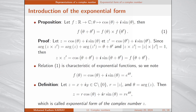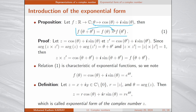Another useful representation of complex numbers is called the exponential form. It relies on the following: let f be a function from the reals to the complex numbers associating to any θ the value cos θ + i·sin θ. This function satisfies f(θ + θ') = f(θ)·f(θ'): the sum is transformed into a product. This relation is characteristic of exponential functions.